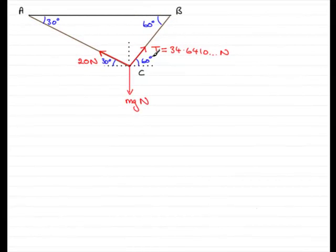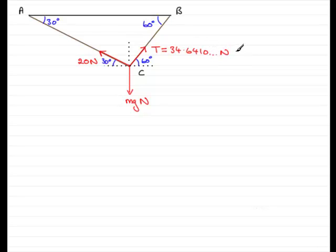Now what you'll notice I've done before we start is I've updated the diagram with the tension that we found from Part A. T equals 34.6410 newtons. That was the tension in the string BC.